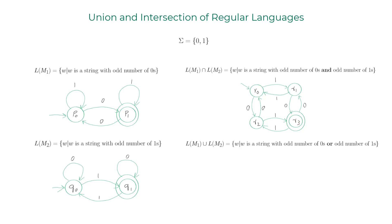Similarly, I have a DFA for the union language as well. It has more accept states than the intersection DFA, but the overall structure of both DFAs is the same. In the next part of the lecture I'm going to show you how to construct these union and intersection DFAs from the individual DFAs.